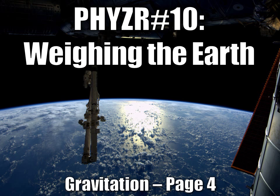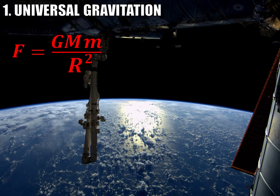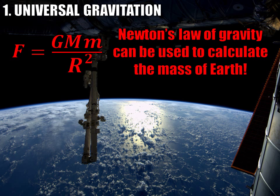It turns out that we can use Newton's Law of Universal Gravitation, which we derived in class, to weigh the Earth. So here's Newton's Law of Universal Gravitation: the force of gravity is equal to GMm over r squared. We can use this Law of Gravity to calculate the mass of the Earth.